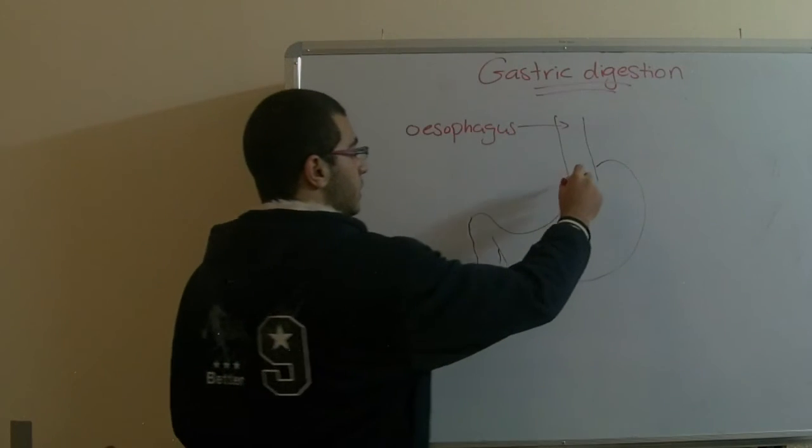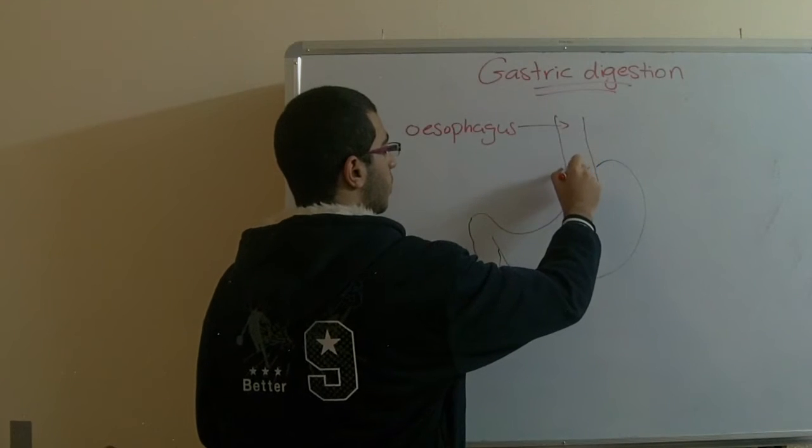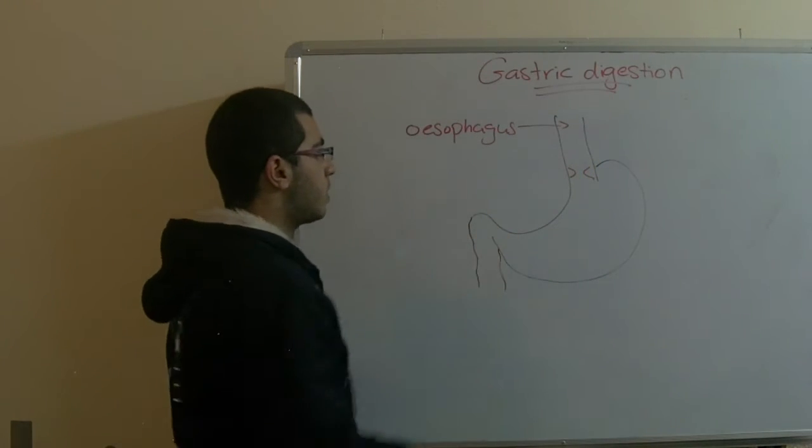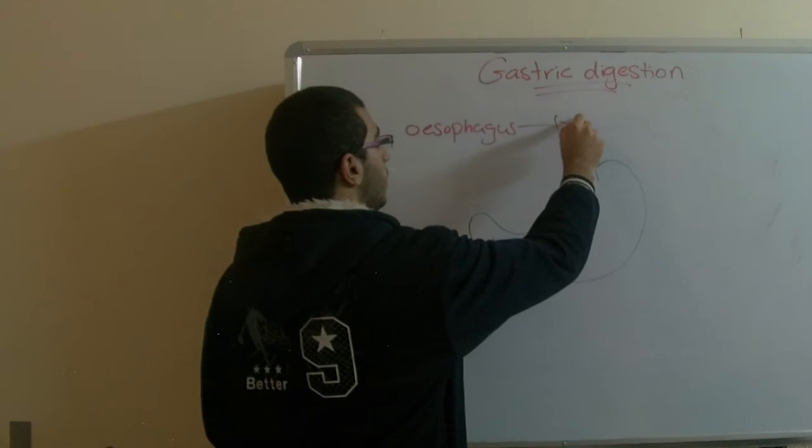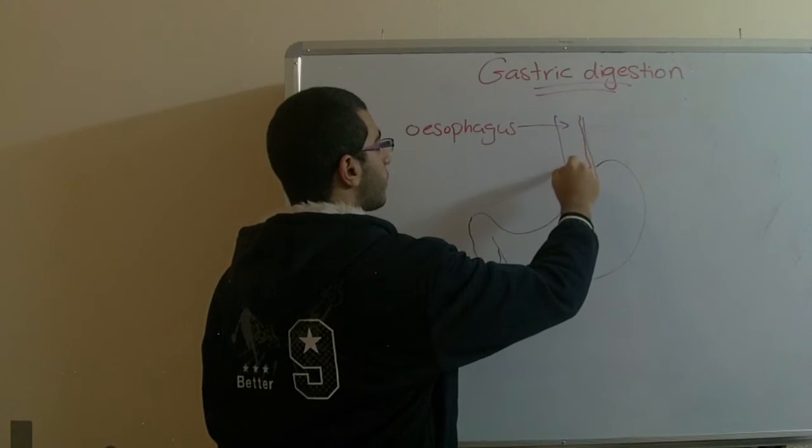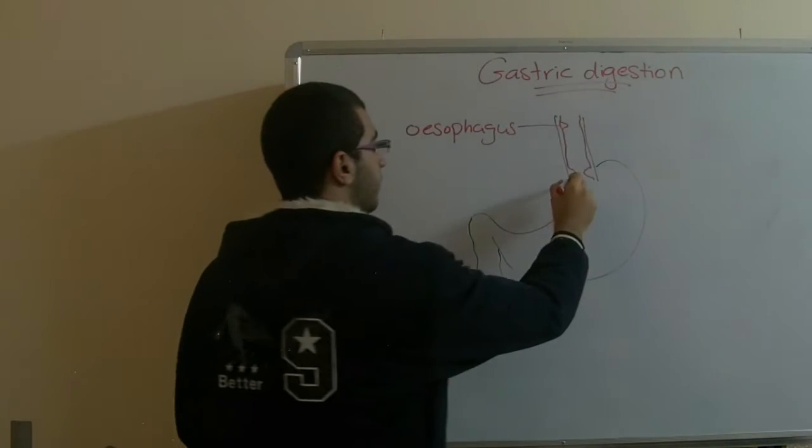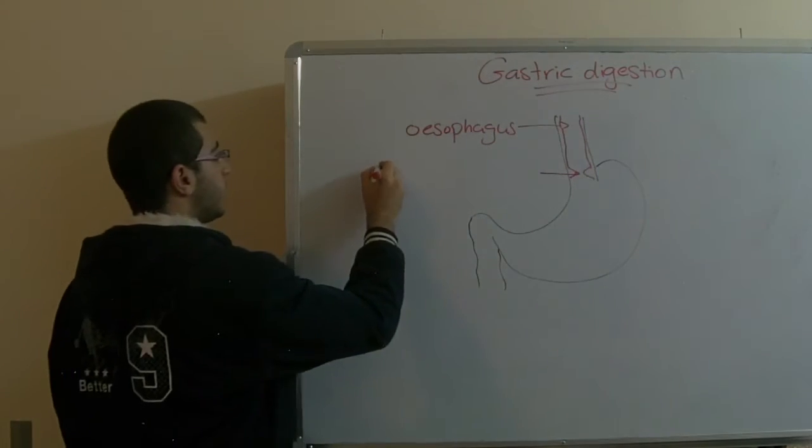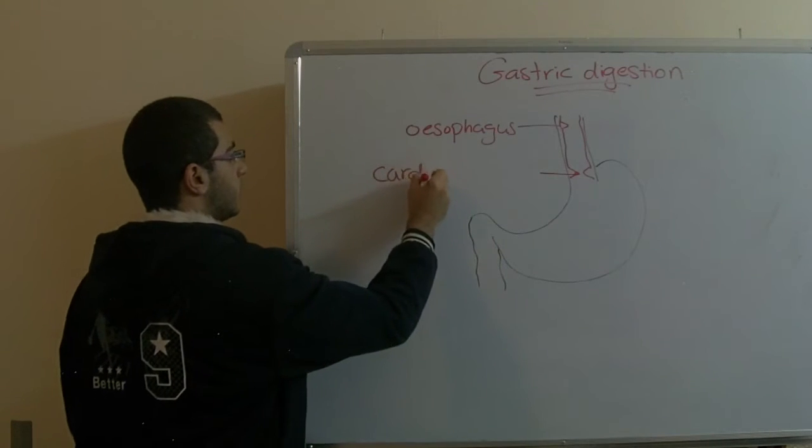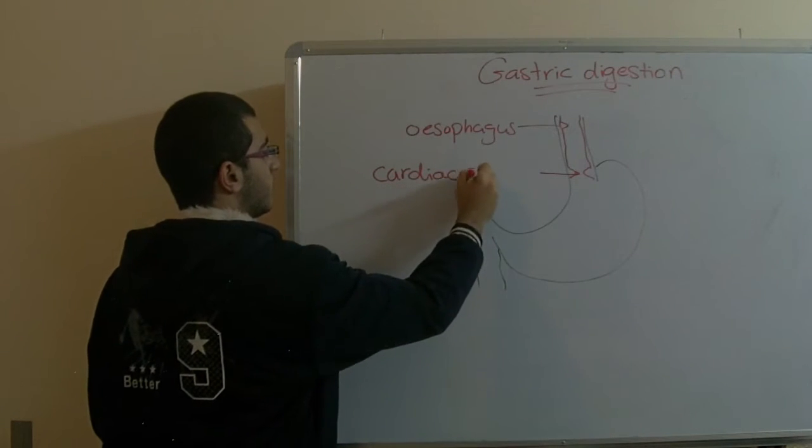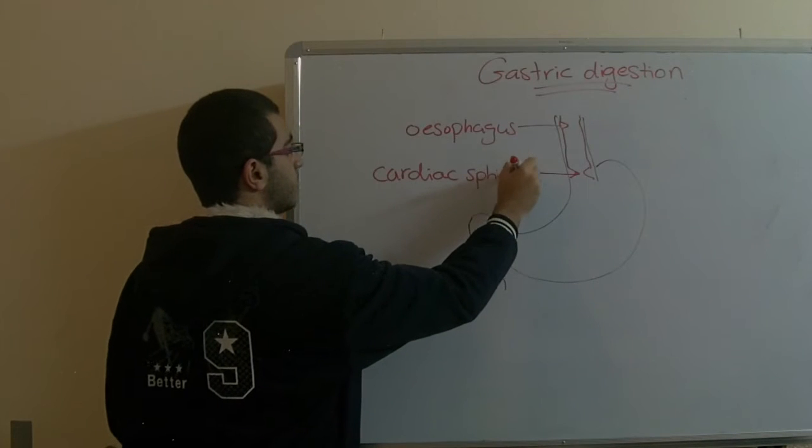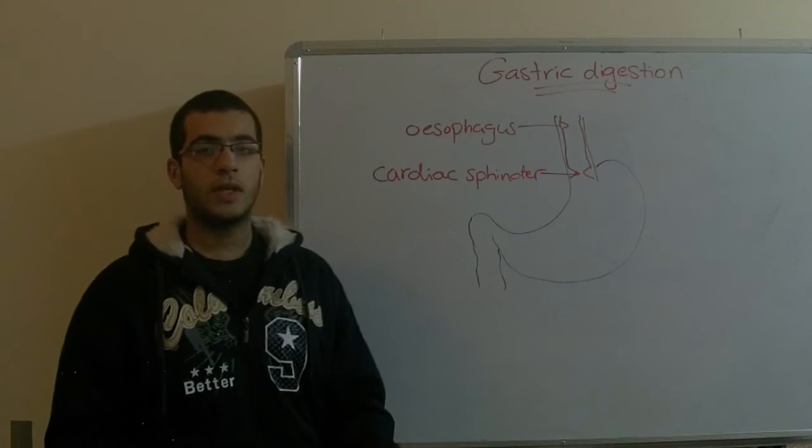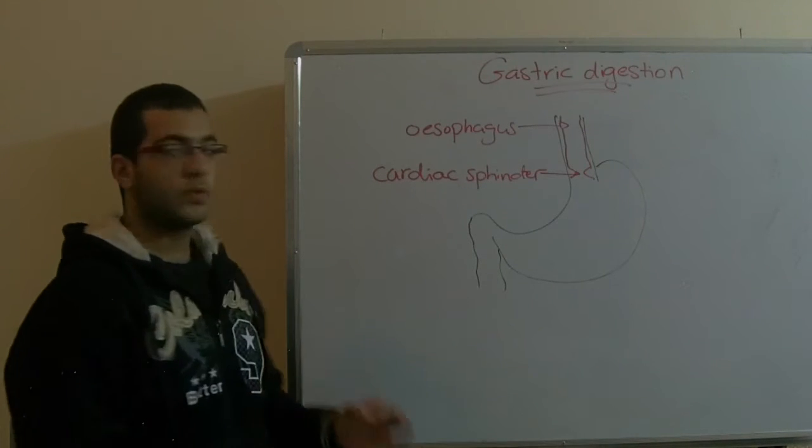There are two sphincters which control the food passage in and out of the stomach. Here we have the first sphincter which is called the cardiac sphincter, and this sphincter is a constricted muscular valve.